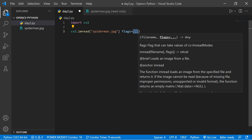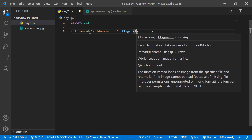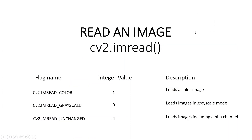You can put the flag as 1, 0, or -1. Looking at the documentation: if I give 1, that means we are reading a color image — you can see cv2.IMREAD_COLOR, which loads a color image. If I assign 0, that means grayscale — cv2.IMREAD_GRAYSCALE loads the image in grayscale mode. And if I put -1, that means unchanged — it loads the image including the alpha channel.